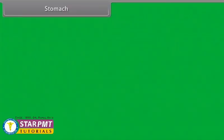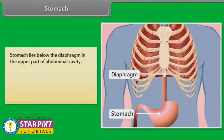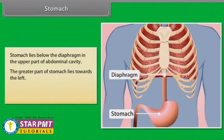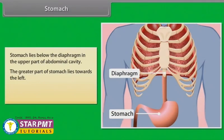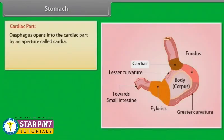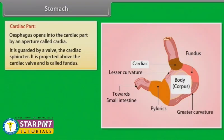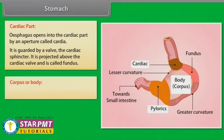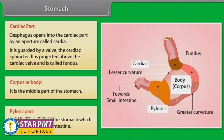The stomach lies below the diaphragm in the upper part of the abdominal cavity, with the greater part towards the left. The stomach can be divided into: the cardiac part, where the esophagus opens by an aperture called the cardia, guarded by the cardiac sphincter; the fundus, projected above the cardiac valve; the corpus or body, which is the middle part; and the pyloric part, the lower part which opens into the small intestine.